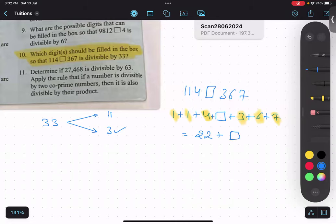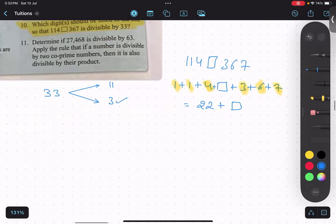So what should I fill in the box so that it is divisible by 3? We can add 5, you can add 8 also, 2 is also possible. So tell me all the possible numbers: 2, 5, 8.